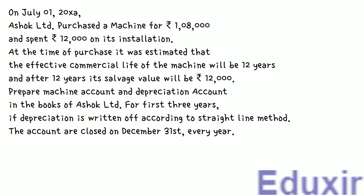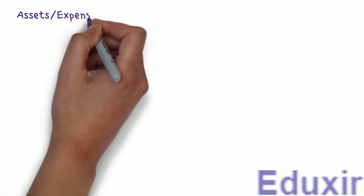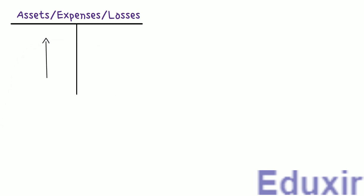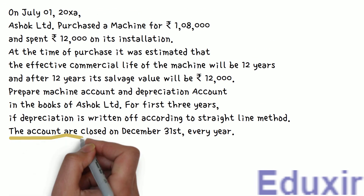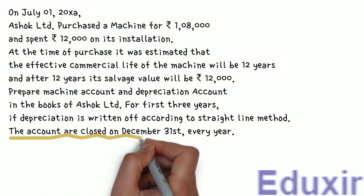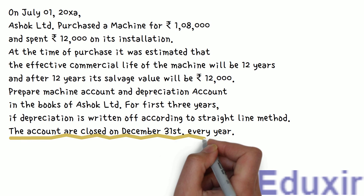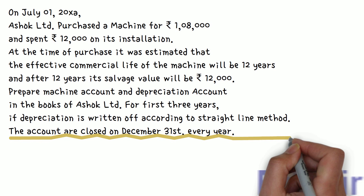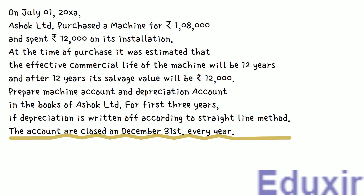Before we proceed with the analysis of this problem, let's first do a small recap. In case of assets, expenses, or losses, any increase should be debited and any decrease should be credited. With this information, let's now proceed with the analysis. This problem requires us to prepare machine and depreciation accounts for the first three years, with depreciation written off according to the straight-line method. The accounts are closed on December 31st, meaning the accounting period starts on January 1st and ends on December 31st.